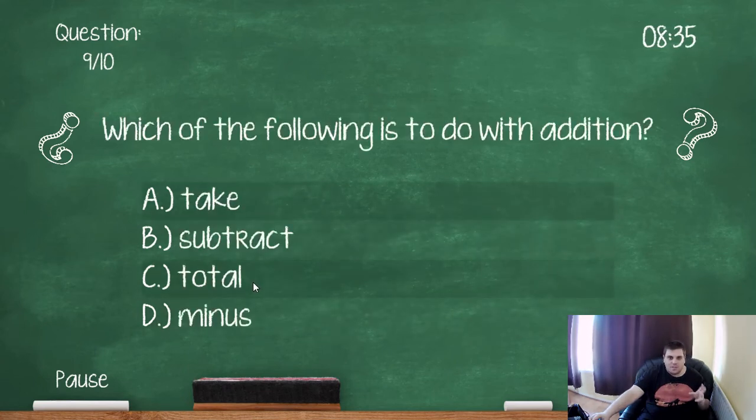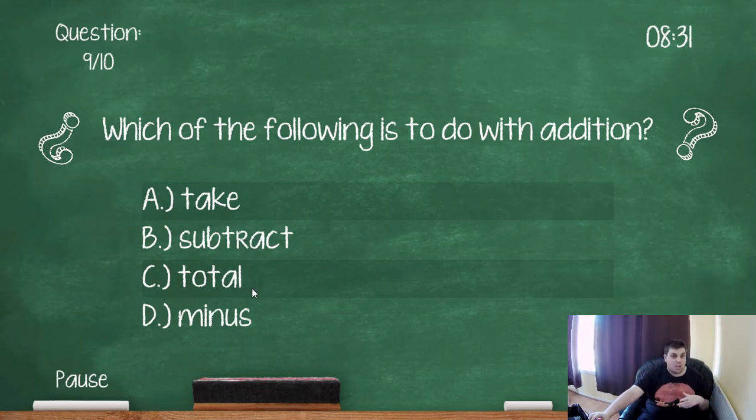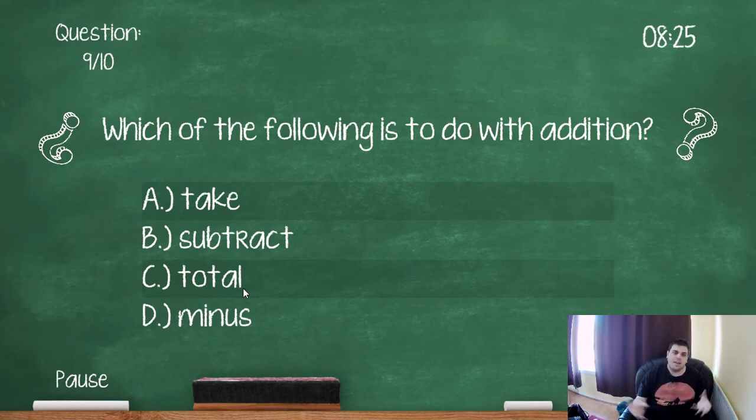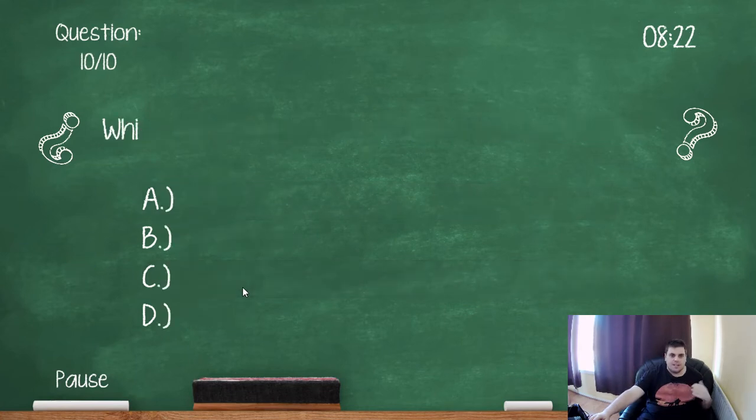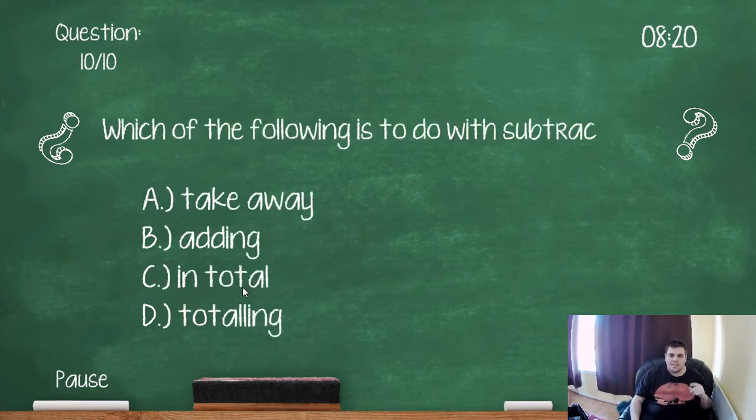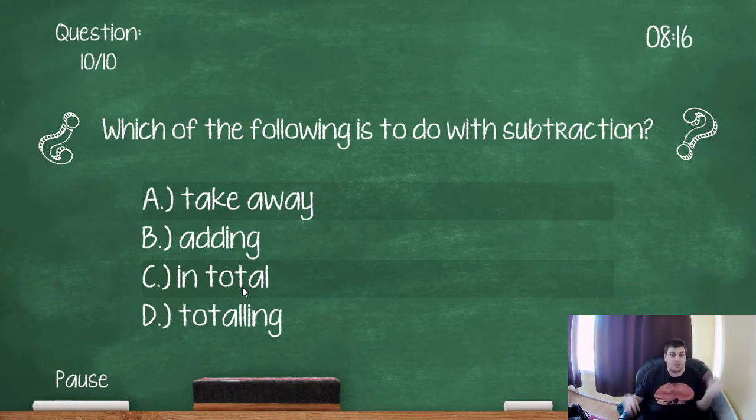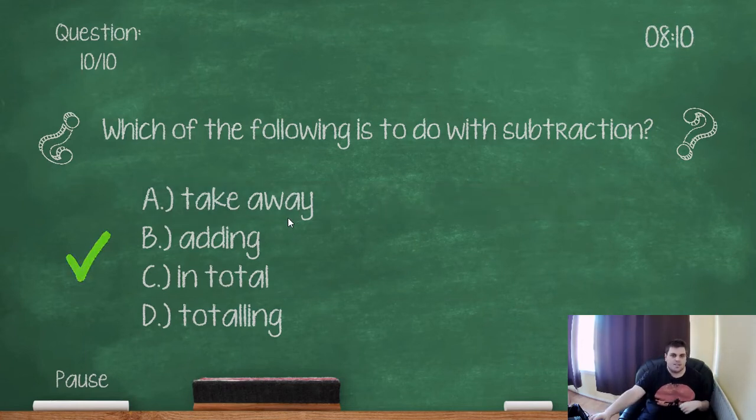Which of the following is to do with addition? So take, subtract and minus is all take away under that bracket of subtraction. Total is when you add together, you get a total. So what's the total of this? Which of the following is to do with subtraction? So again, we have adding in total totaling, which all is adding things together and take away is you're taking something away. So you're subtracting it.